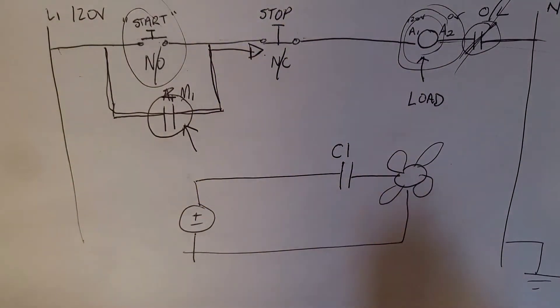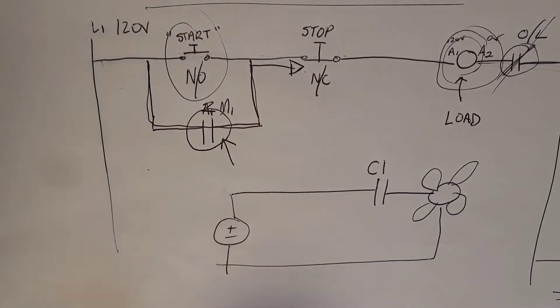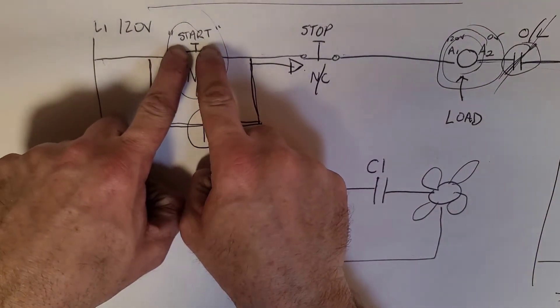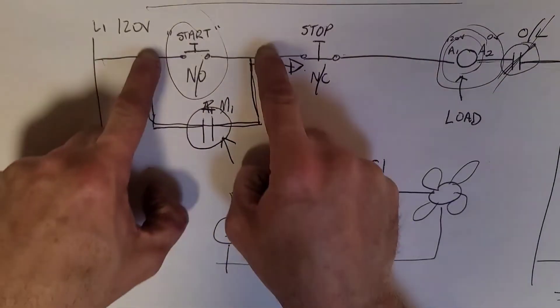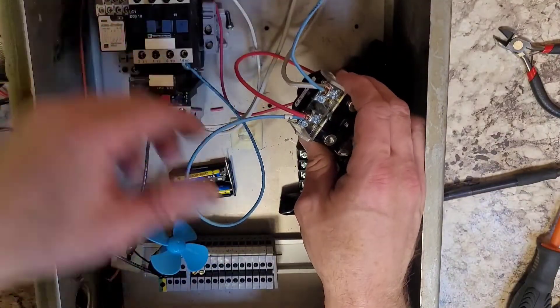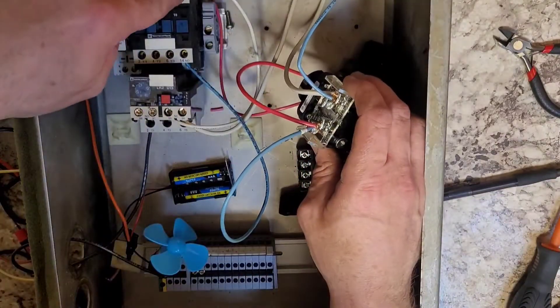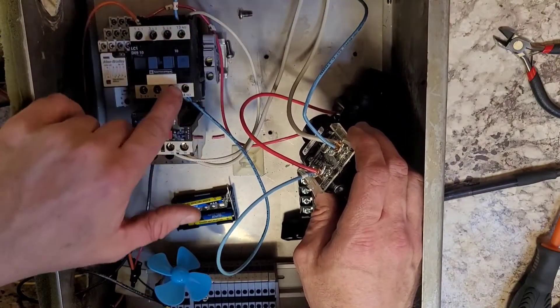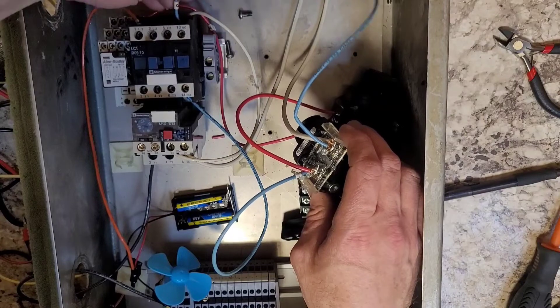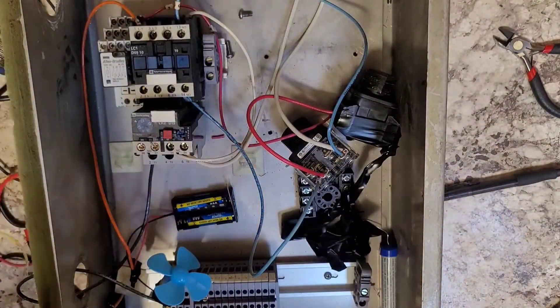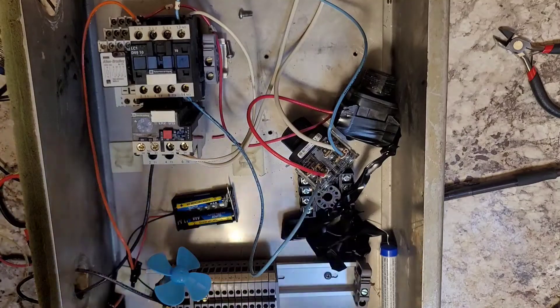Okay, so I wired it up. If you look right here, we're literally tying in parallel to our start push button. I quite literally put two wires on either terminal on the start push button and ran them over here to the normally open auxiliary contacts on this motor. I can actually demonstrate for you real quick how that works.